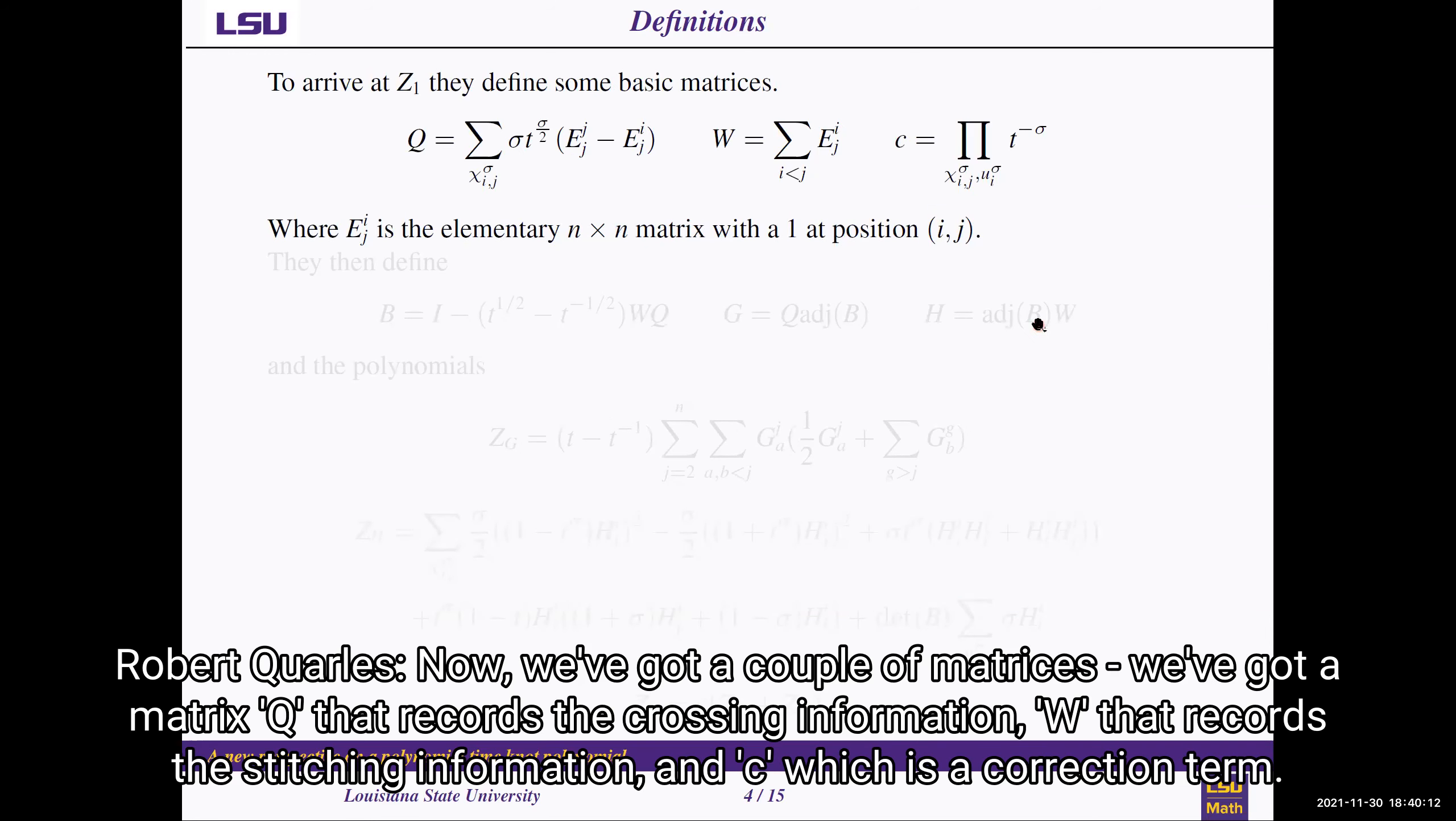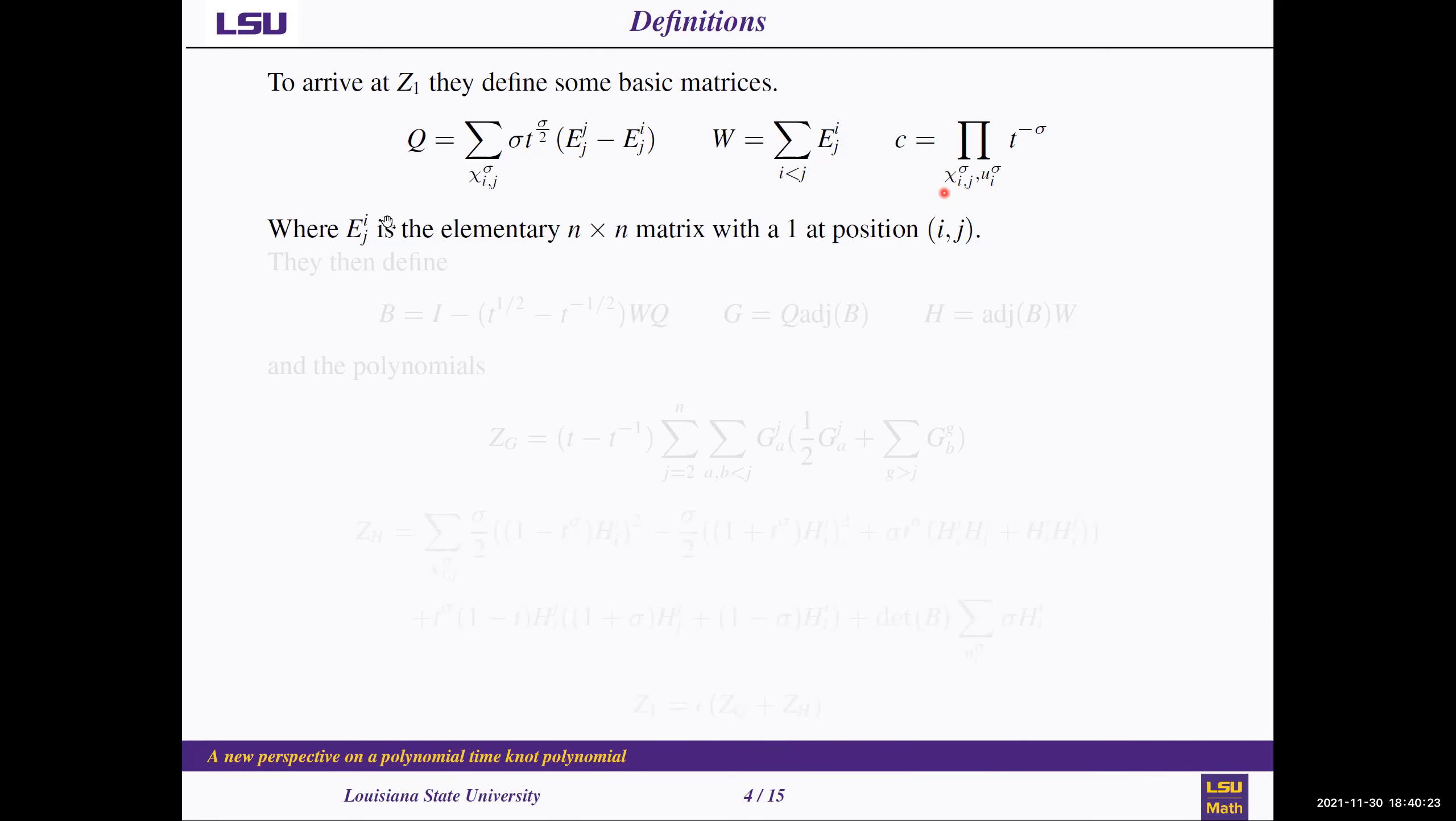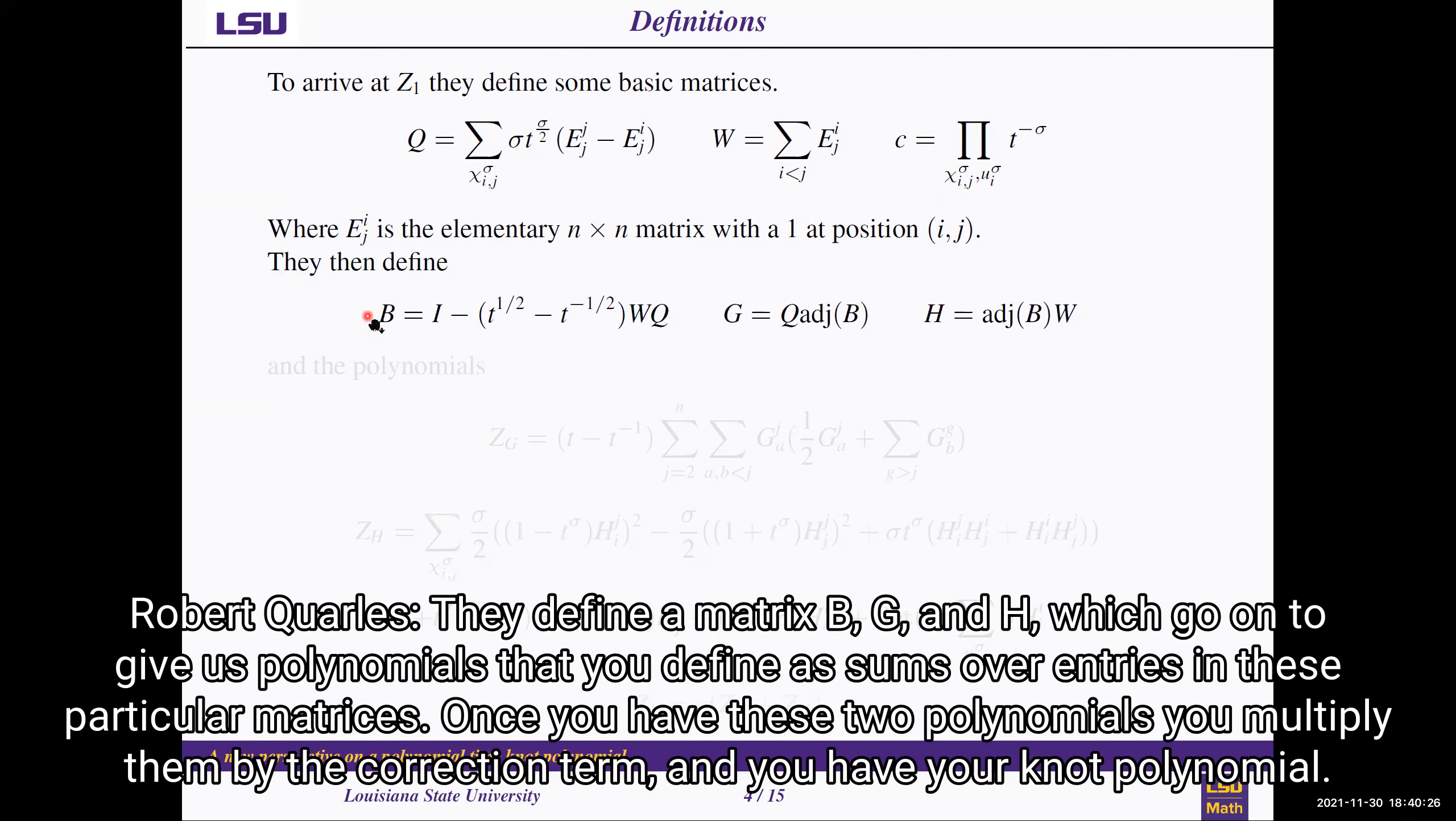Now we've got a couple of matrices. We've got a matrix Q that records the crossing information, W that records the stitching information, and C, which is a correction term. They define matrices B, G, and H, which go on to give us polynomials that you define as sums over entries in these particular matrices. Once you have these two polynomials, you multiply them by the correction term and you have your knot polynomial.